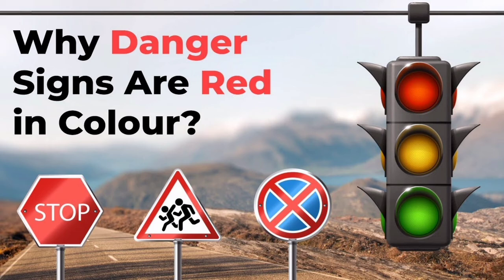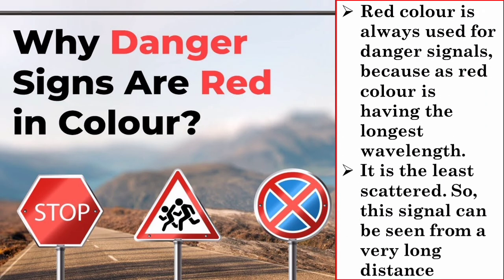Danger signal lights are usually of red color. Being of maximum wavelength in the visible region, red light is least scattered by fog or smoke. Therefore, red colored signal can be easily seen even from a larger distance. Even at the top of all high-rise buildings, red light signals are fixed.